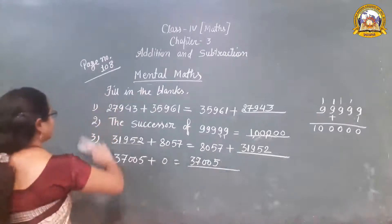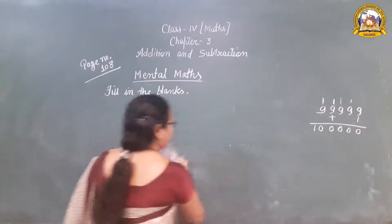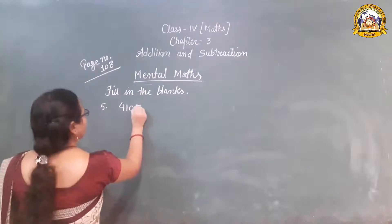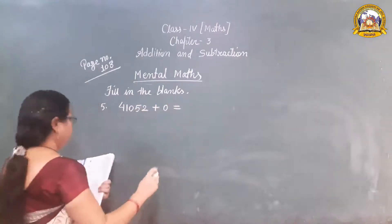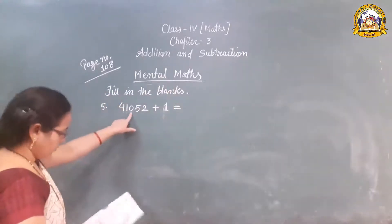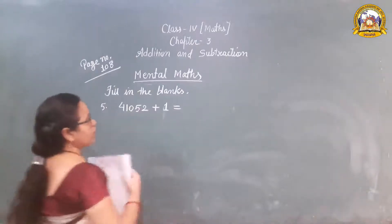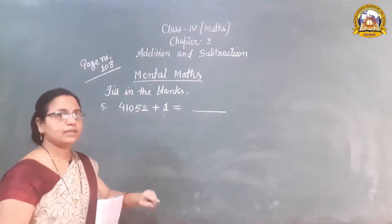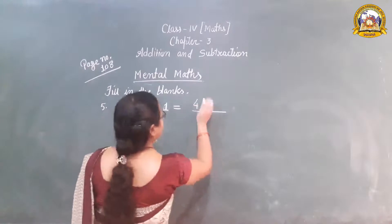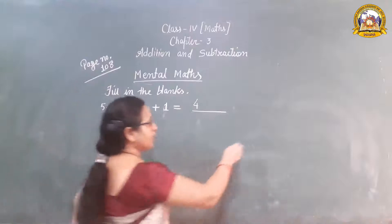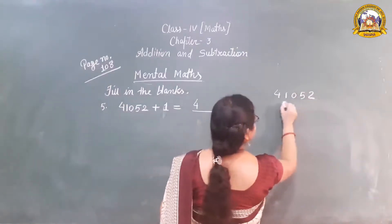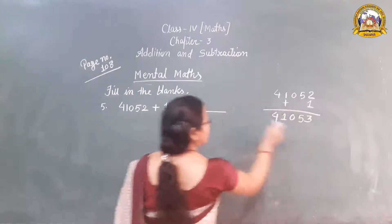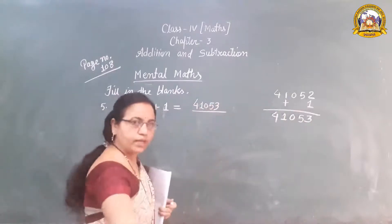Now question number 5: 41,052 plus 1 is equal to what? This is also a property — when 1 is added to a number, we get the successor. 2 plus 1 is 3, then 5, 0, 1, 4. So what is the answer? 41,053. That is your answer.